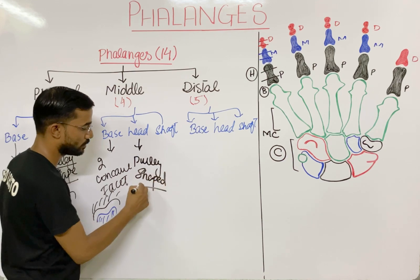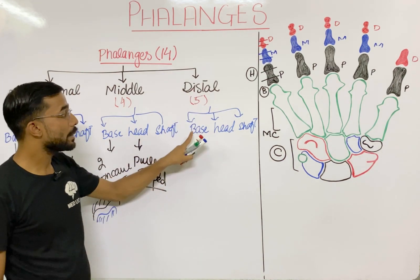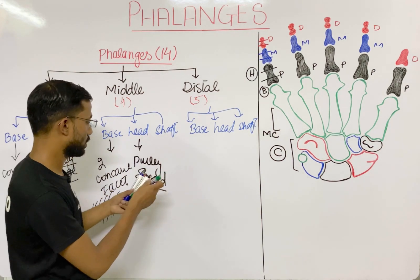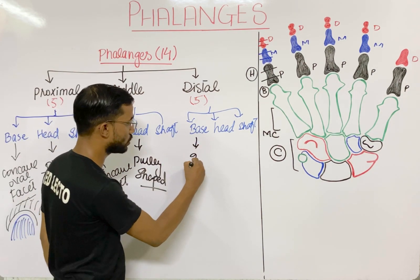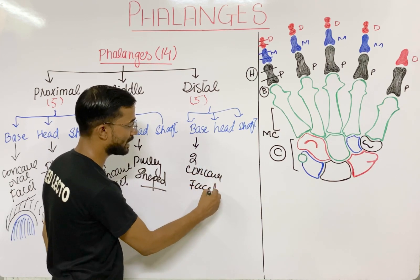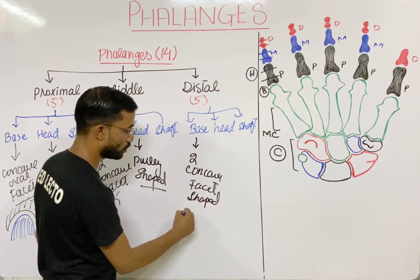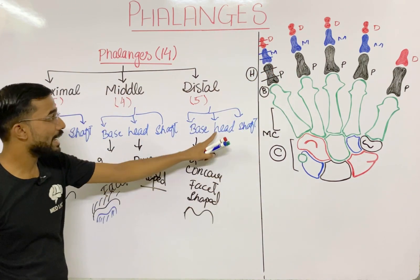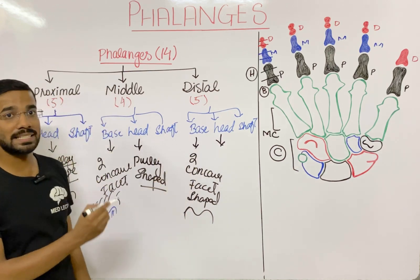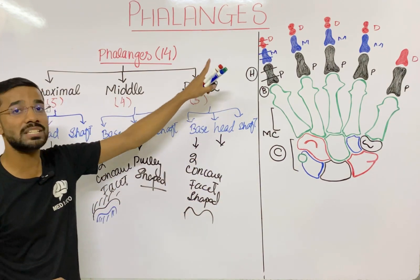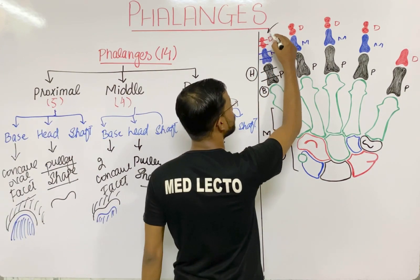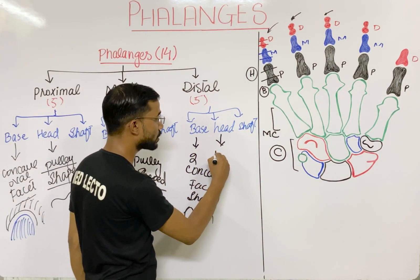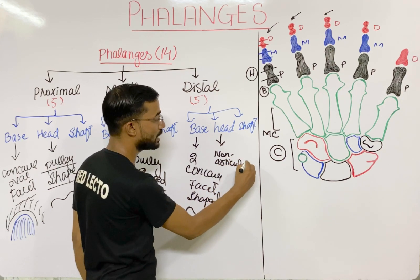The base of the distal phalanges again has two concave facets that will articulate with the previous middle phalanges. The head of the distal phalanges is very important because it is non-articular — at that side there is no attachment of any bone, as that is our fingertip.